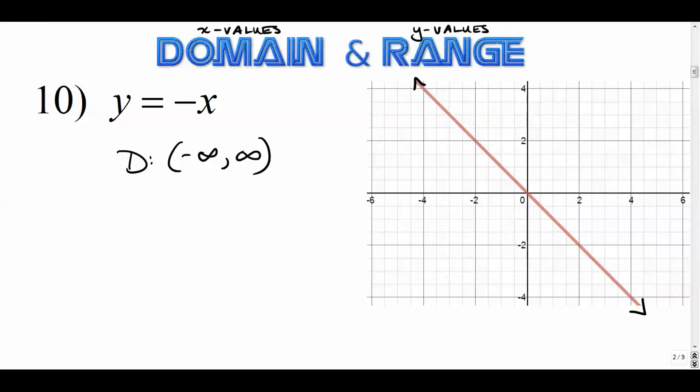No restrictions. It goes up and to the left forever, and it goes down and to the right forever. So every x value in our real number system is possible. And same thing for the range. No restrictions whatsoever.